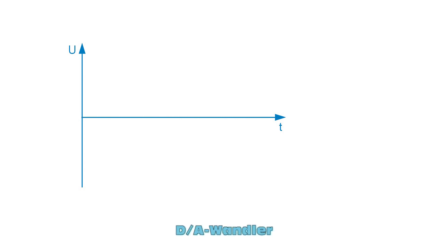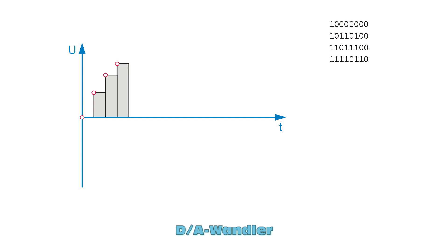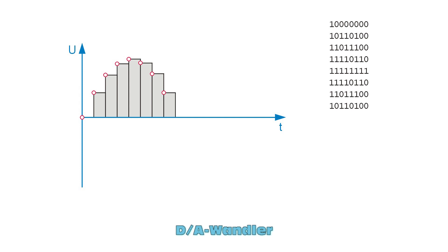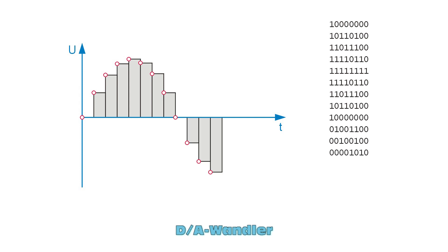On the receiver side, the impulses must be turned back into the original signal, because our ears don't understand binary code. A digital-to-analog converter puts the recorded numbers into the corresponding voltage values. There is a stepped signal flow, which can only approximate the original curve.